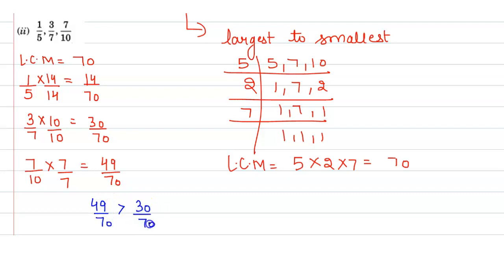Or according to question we can write it as 7 by 10, 3 by 7, and the last one is 1 by 5. So this will be the order. I hope this is clear. Thank you.